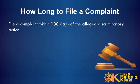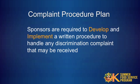A complaint must be filed within 180 days of the alleged discriminatory action. All sponsors must develop a written civil rights complaint procedure and implement this procedure. Sponsors may adopt the Oklahoma Summer Food Service Program prototype procedure located on the webpage. If sponsors choose this option, they must put the sponsor's name at the top of the procedure and then train all staff on this procedure.